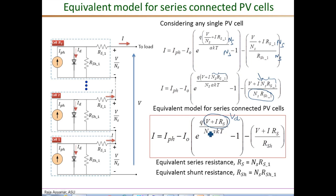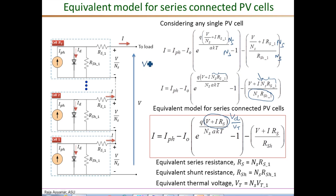The equivalent thermal voltage VT for the series-connected model is NS times the thermal voltage of a single PV cell. Recalling that VT1 equals a·k·T/q, the equivalent thermal voltage becomes a·k·T·NS/q, or equivalently NS times VT1.